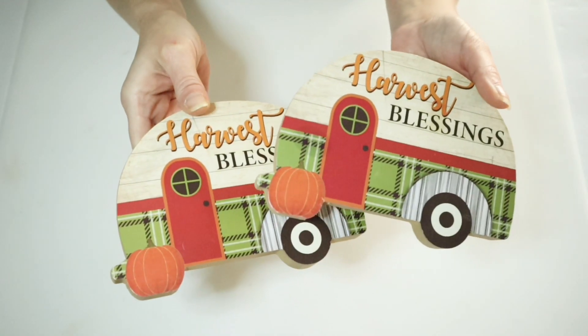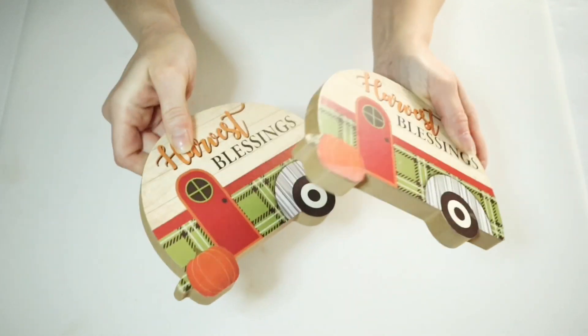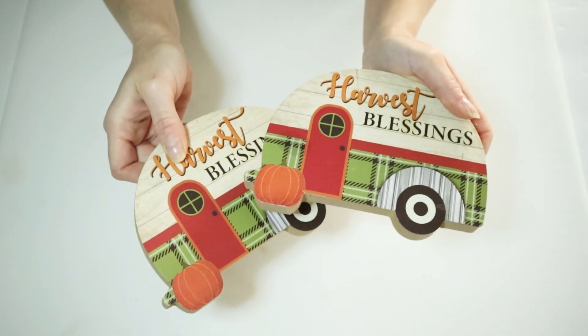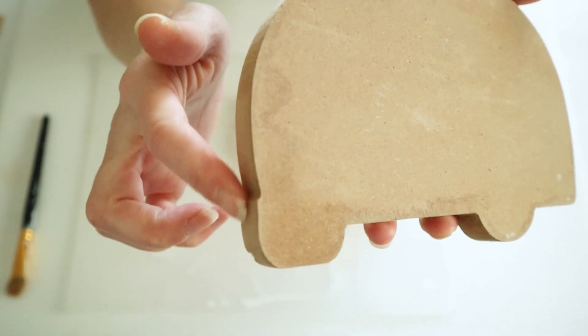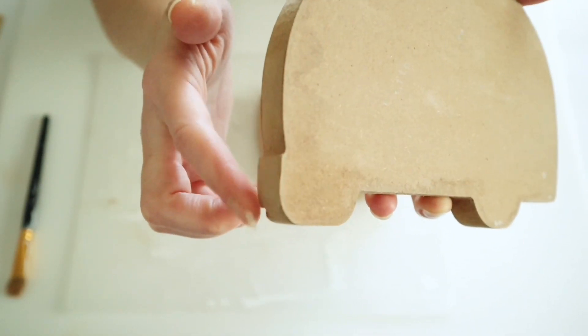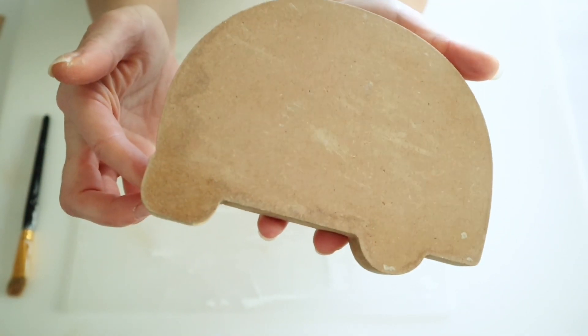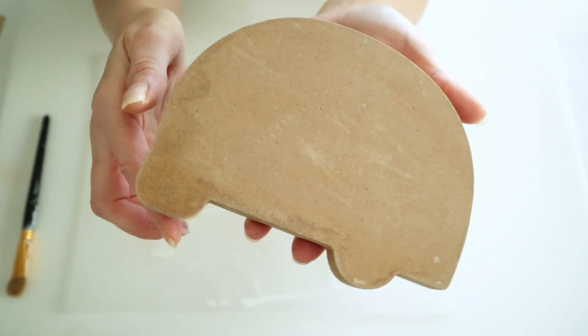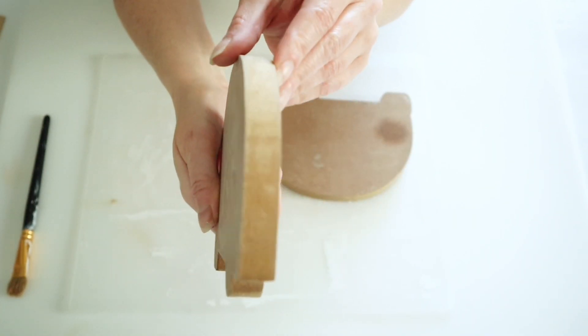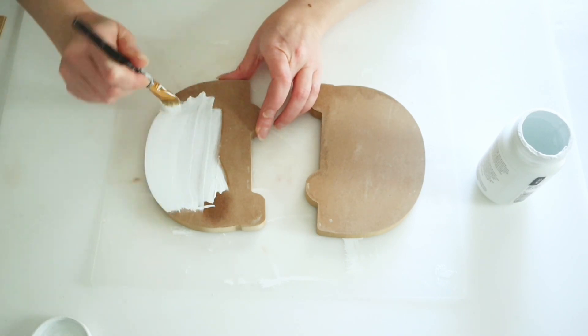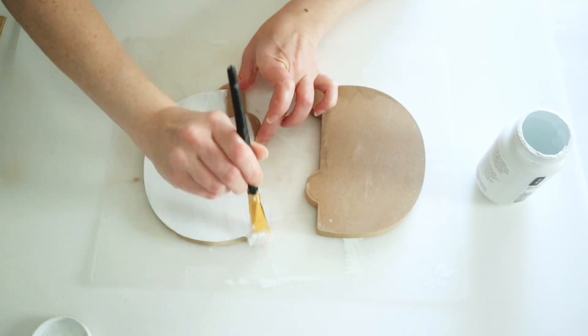For this next project, I picked up these little campers from Dollar Tree back in the beginning of fall. They actually still had them just a few weeks ago, but I did go ahead and remove the little sticker. I just used my blow dryer and then just a wet rag to get the rest of it off and I did cut off the little bumper part in the back, but I left the tires on because I'm going to cover those up later. You could cut those off if you wanted to, but I did go ahead and give both of these two coats of my white chalk paint.